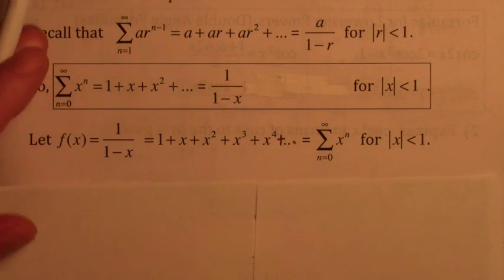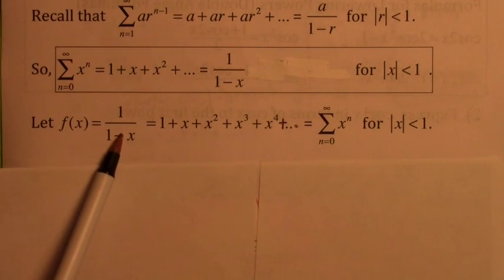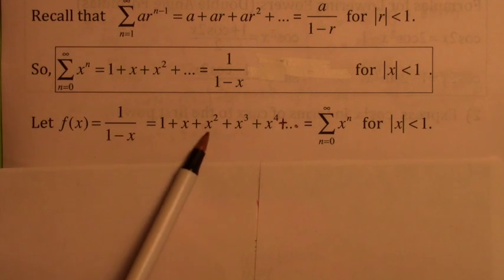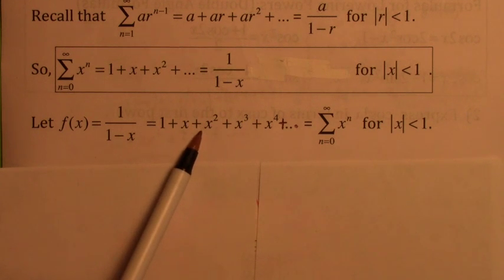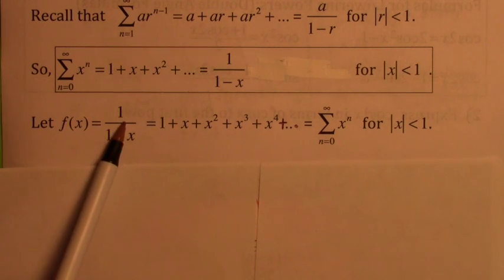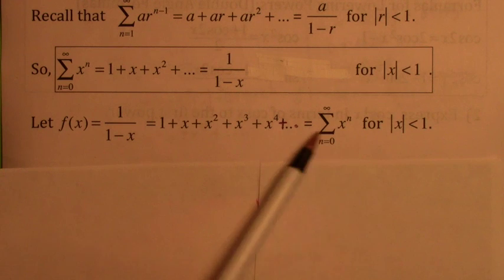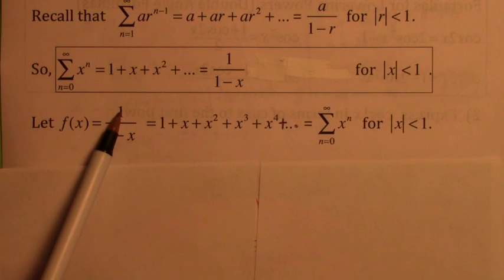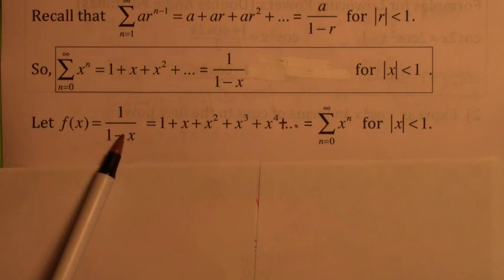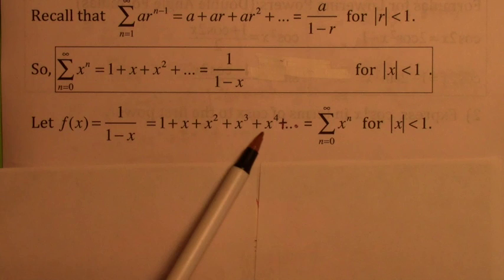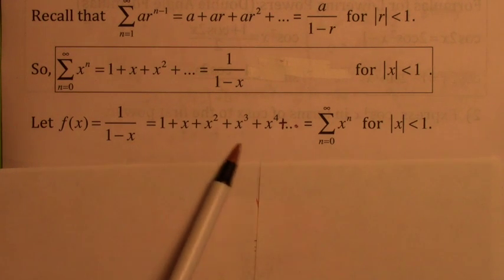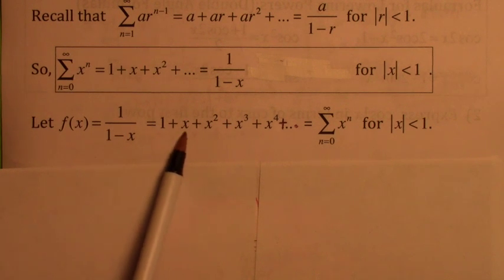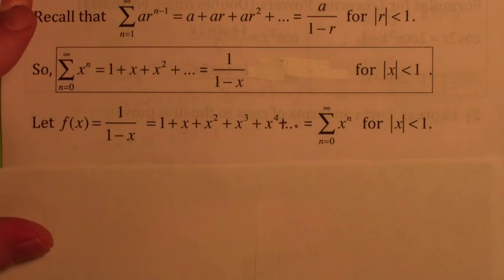What I was getting at is you could think of it like this: 1 over 1 minus x is a function, and it can be represented by this infinite degree polynomial. For example, as long as x has absolute value less than 1 — if you plug in one half, f of one half is 1 over 1 minus one half, which turns out to be 2. If you plug in one half everywhere there's an x and add up this infinite series, you would get 2.